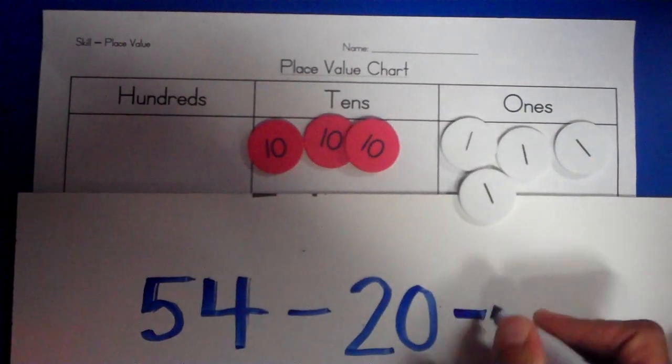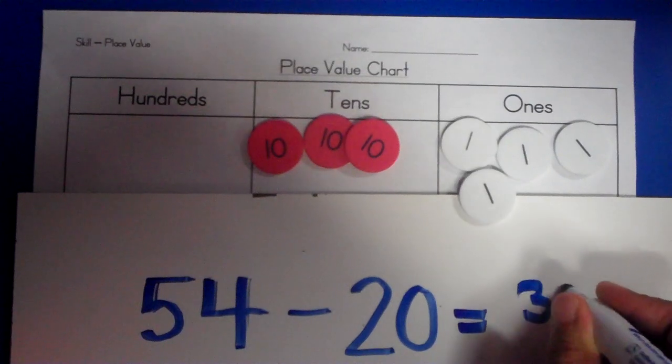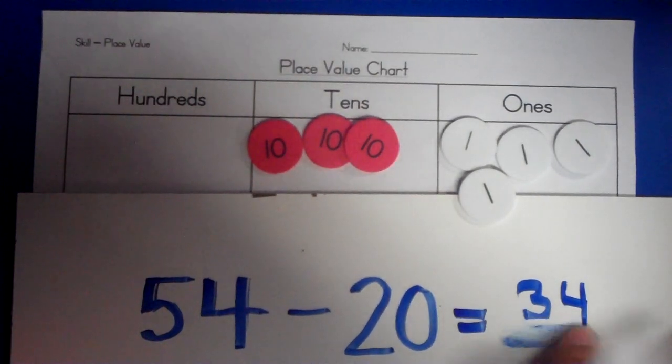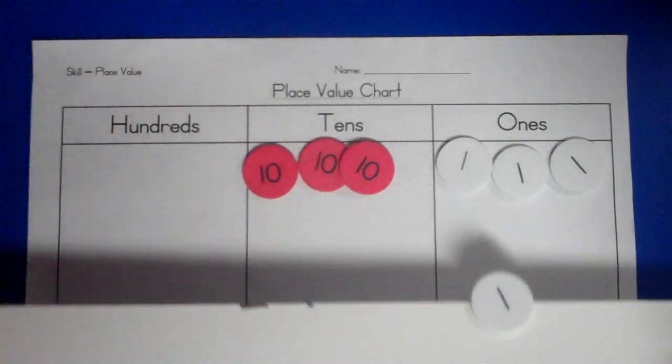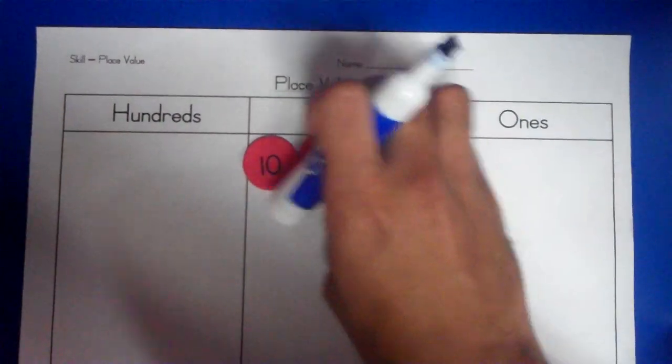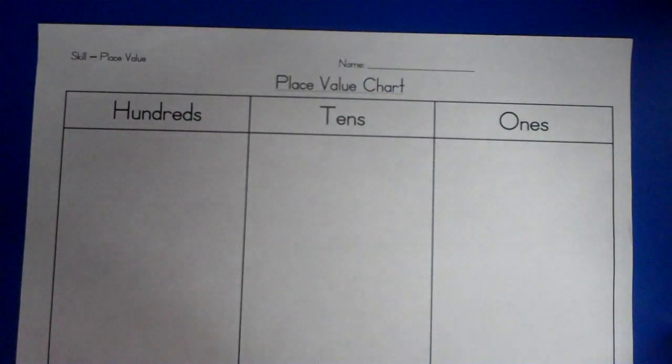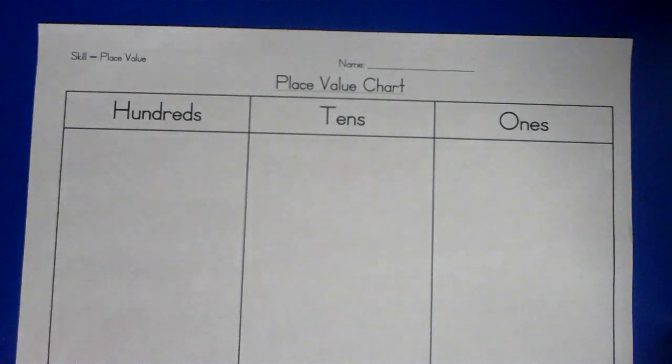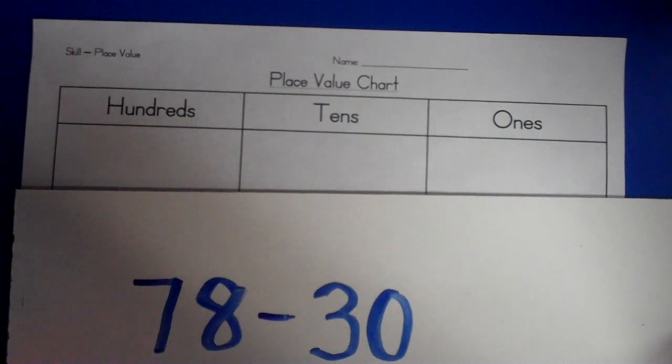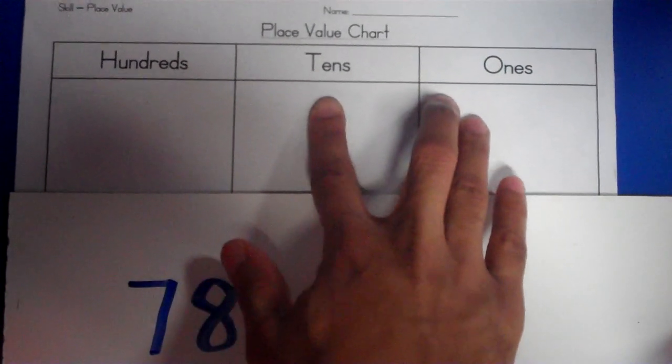So, 54 minus 20 equals three tens and four ones, which is 34. Because this is the ones place, and this is the tens place. Three tens and four ones. Next, let's model our second subtraction problem. Our second subtraction problem is 78 minus 30.